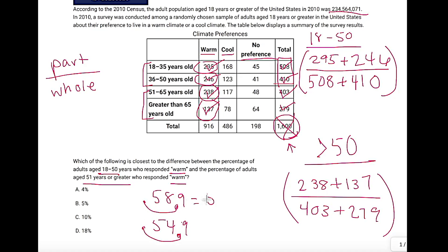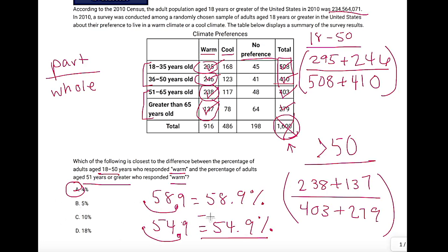I've gotten 0.589 and 0.549. To convert decimals to percentages, just move the decimal place over two spots: 58.9% and 54.9%, which means we have a difference of 4%. If we're going from percentages to decimals, move two places to the left. That is how we use the ratio rule of part over whole to find percentages.